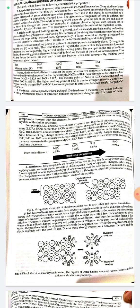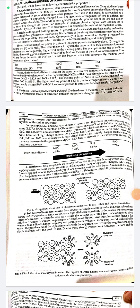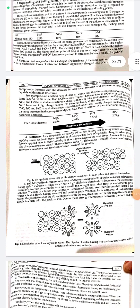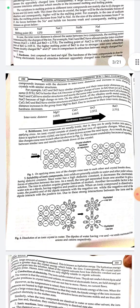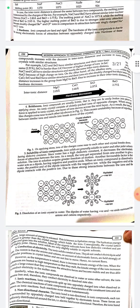Brittleness: ionic compounds are usually brittle and can be easily broken into pieces by applying stress. This causes instability because of repulsion between similarly charged ions, resulting in breakdown of the crystal. On applying stress, ions of like charges come near to each other and the crystal breaks down.